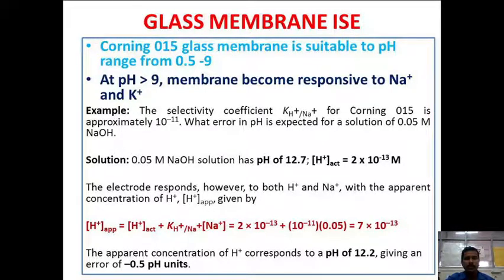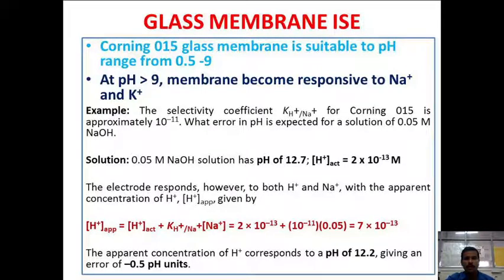Let us illustrate with an example. The selectivity coefficient for Corning 015 glass for hydrogen ion in the presence of sodium ion is 10⁻¹¹. What is the error while measuring the pH of a 0.05 molar NaOH solution? According to this selectivity coefficient, the sensor should be poor at detecting sodium ion since the value is far less than unity. Let us calculate the actual error.